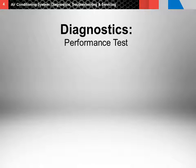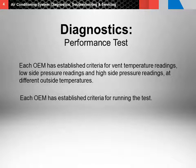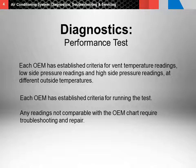Now you're ready for an air conditioning performance test — one of the most important steps in diagnostics. Each OEM has established criteria for vent temperature readings, low side pressure readings, and high side pressure readings at different ambient temperatures. Remember, system pressures are related to the outside air temperature: the higher the outside temperature, the higher the system operational pressures will be for both the high and low sides. Typically, engine RPM is raised, windows are down, and fan speed is on high. Readings are taken and compared to a chart. If vent temperatures and pressures are within stated readings, the air conditioning system is correct and no repairs are needed. Any readings not comparable with the OEM chart require troubleshooting and repair.